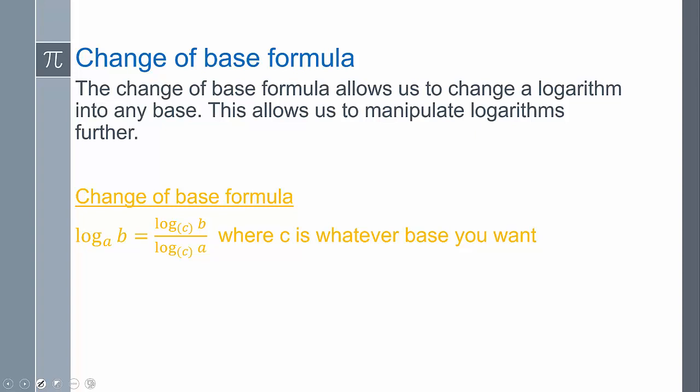Essentially, the change of base formula is: log base A of B equals log base C of B over log base C of A, where C is whatever base we want it to be. Typically we use this to convert into common logs we can enter in our calculator, but in other instances where we need to evaluate or condense things together, the change of base formula helps us simplify.